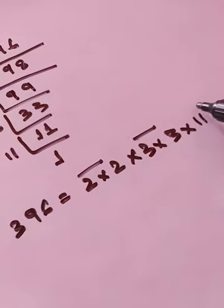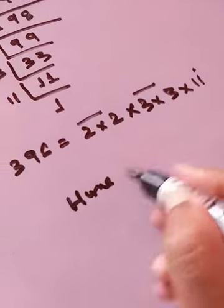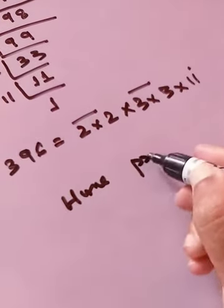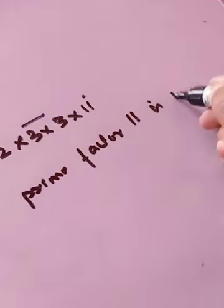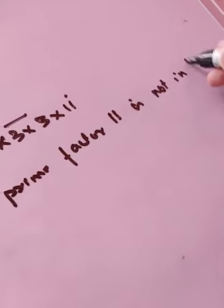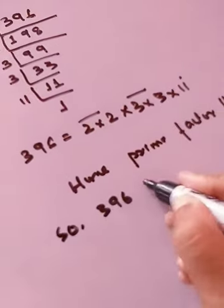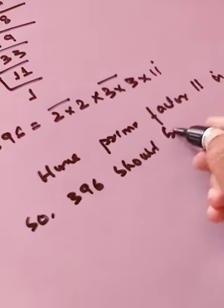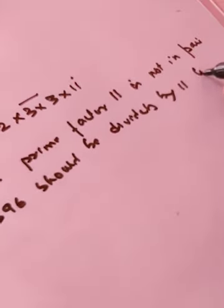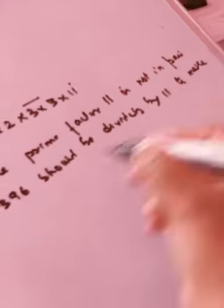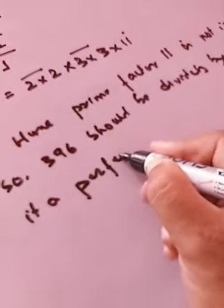So these are all numbers are in pairs but 11 is not in pairs, so hence prime factor 11 is not in pairs. So 396 will be written as 2×2, 3×3, 11, so these are all numbers in pairs but 11 is not in pairs. So 396 should be divided by 11 to make it a perfect square.